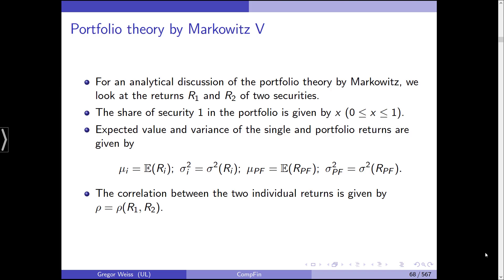For an analytical discussion of Markowitz portfolio theory, we just look at the returns R1 and R2. We start with the two security case. The share of security one in the portfolio is given by X. It is between zero and one. If it were a negative weight, this would mean that we allow for short selling. If it would be larger than one, you would allow lending and borrowing. And we're not doing this. Not yet. So share of stock one is given by X and one minus X then is the share in stock two.